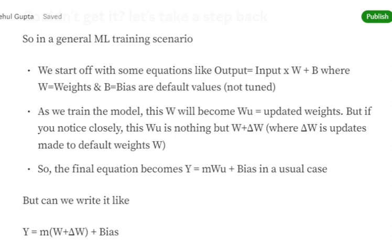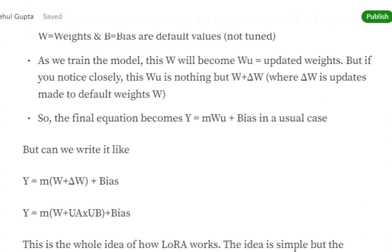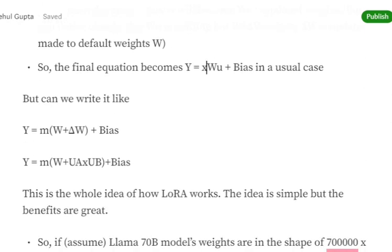The final equation becomes Y = X·W + Bias, but W can be written as W + ΔW, and ΔW can be written as UA×UB. We are creating a separate update weight matrix and won't be touching the original W.